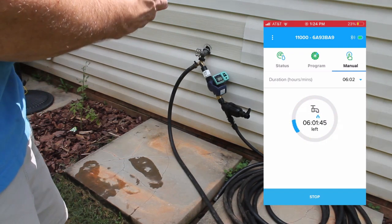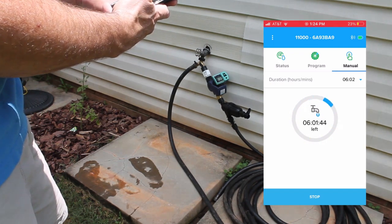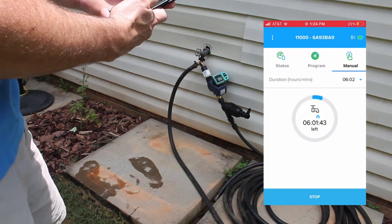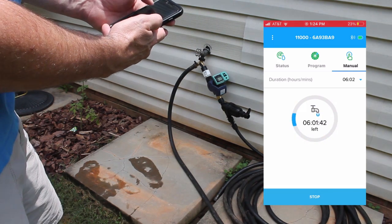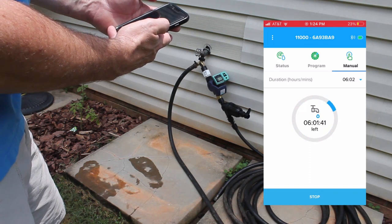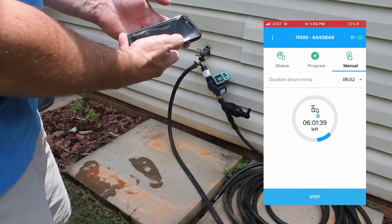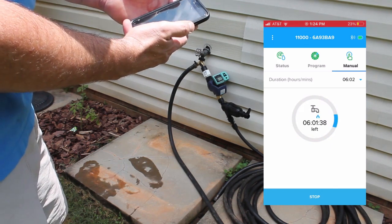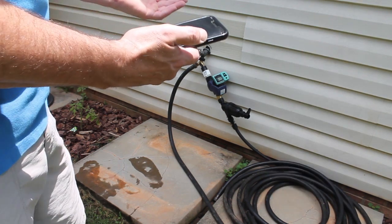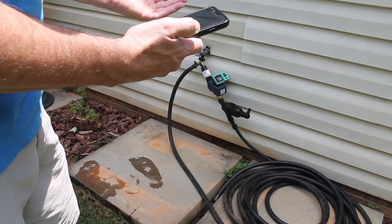Let's go ahead and stop our manual. We've got things that we can do here. It gives you the status of your next irrigation, the program. You can go in here and set your days, your start times, run time, and all that. So it's basically everything that you need in the app here.